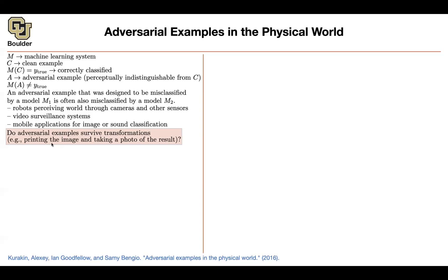Do adversarial examples remain adversarial examples after a couple of transformations? The topic of this paper is: you print an image that is adversarially perturbed, take a photo of it, and then show it to your neural network. You do some transformations on your image before showing it to your neural network. Does this image remain an adversarial example after those transformations?